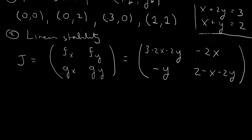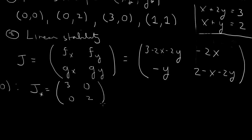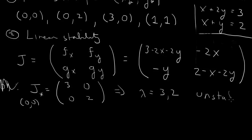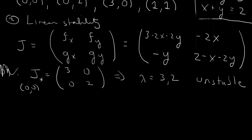We calculate the eigenvalues of the Jacobian at each fixed point. At (0, 0), the Jacobian evaluates to the diagonal matrix with entries 3 and 0 in the first row, 0 and 2 in the second row. The eigenvalues are 3 and 2 — both positive — so the fixed point (0, 0) is unstable.